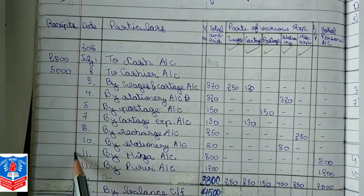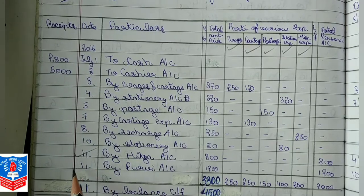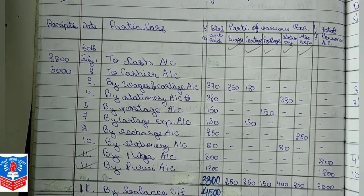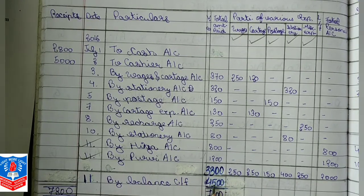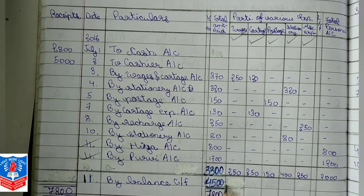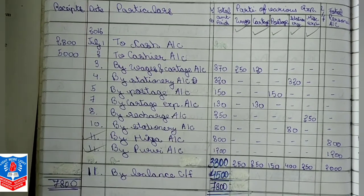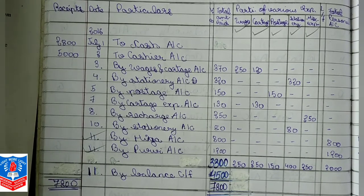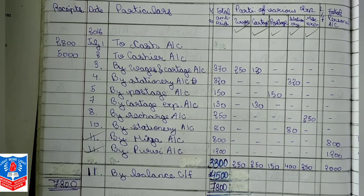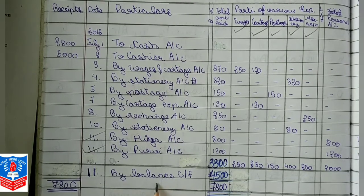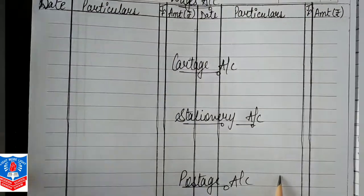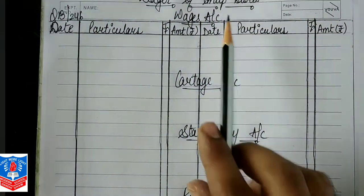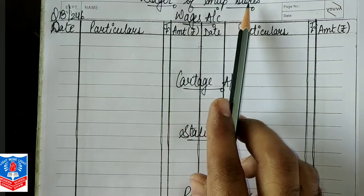The sixth will be Hia's account and the seventh will be Purvi's account. The balance as per the question I have solved is 4500, which will become the opening balance for the 12th date. From this you can verify your answer. The ledgers of Anup Stores are ready and I have prepared them here.